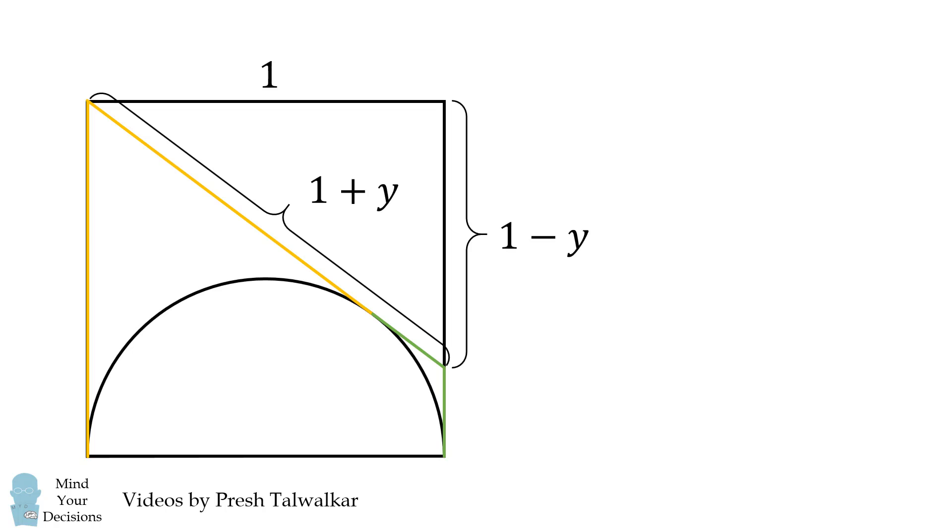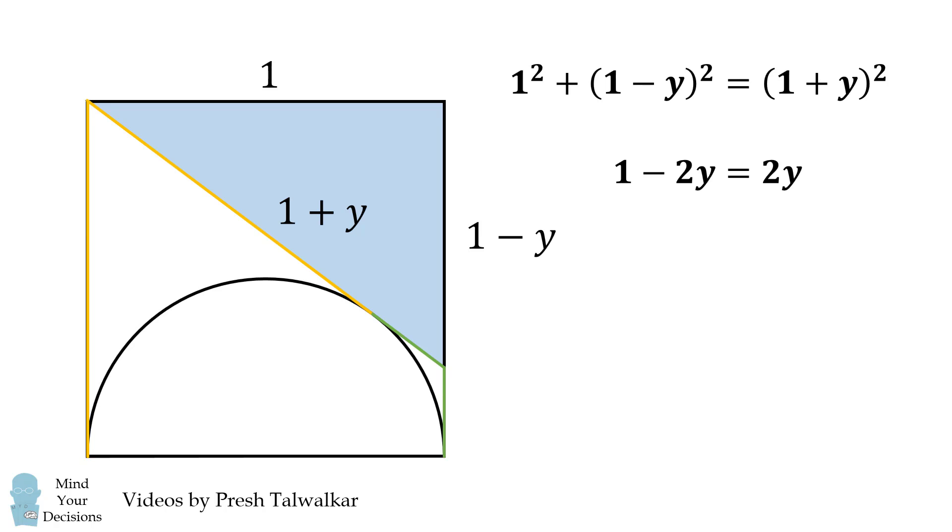So now we can solve for Y, because we have a right triangle, and we're going to use the distance formula. 1 squared plus the quantity 1 minus Y squared is equal to the quantity 1 plus Y squared. We simplify this, and we solve that Y is equal to 0.25.